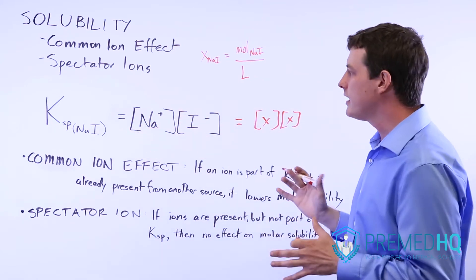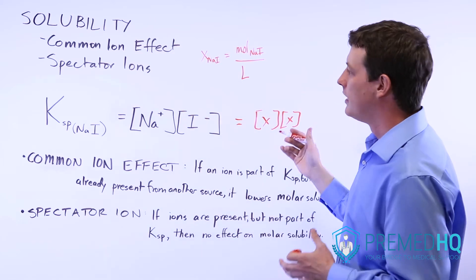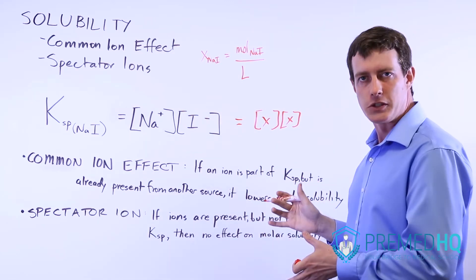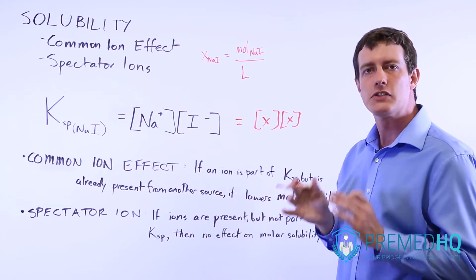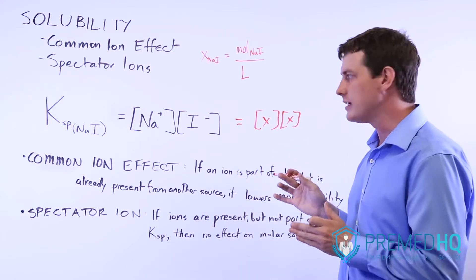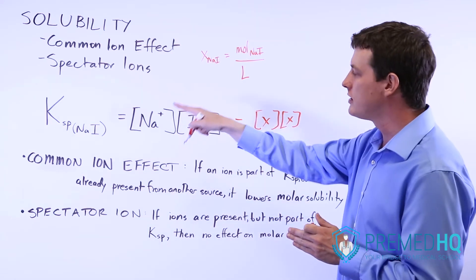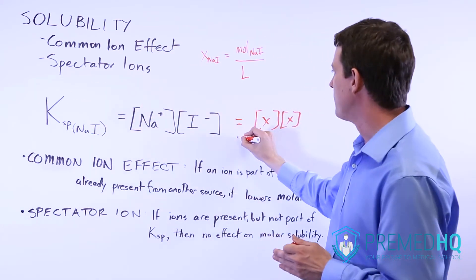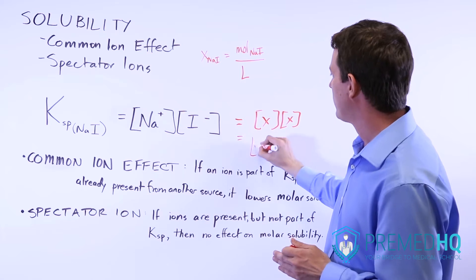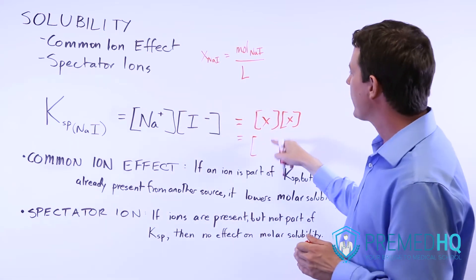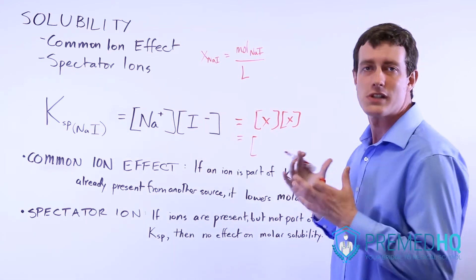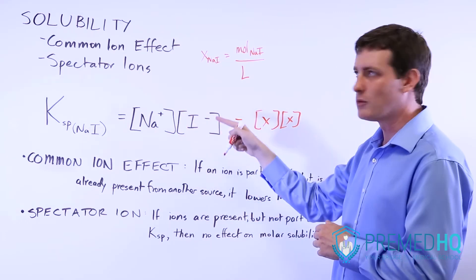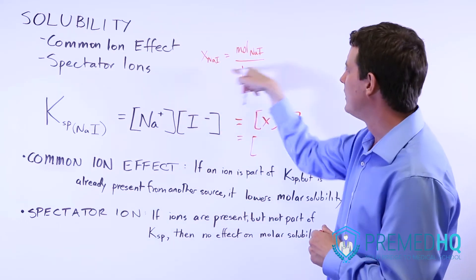Now let's just say that you already had present maybe a 0.1 molar NaCl solution. And that means that you already have 0.1 moles of NaCl. That's going to change the equation a little bit. KSP is still going to be the same, but rather than just X as Na, let's use N. N is the new amount of sodium iodide that will dissolve. So we could say N of NaI here.